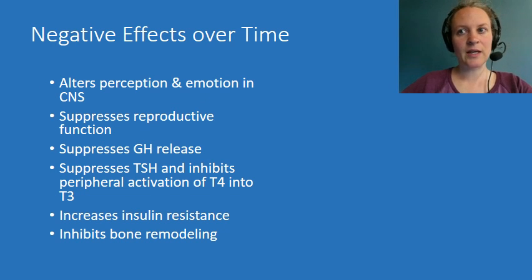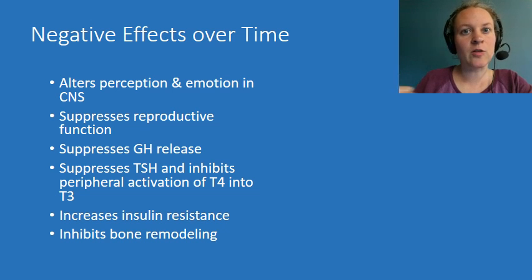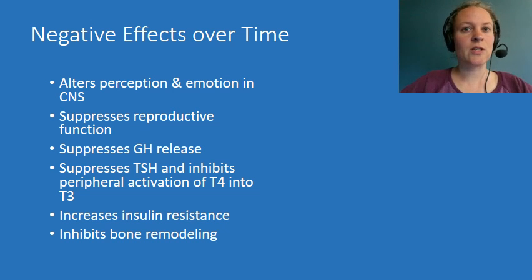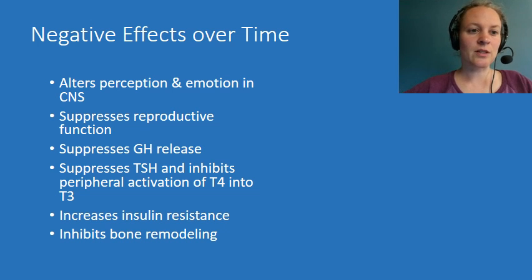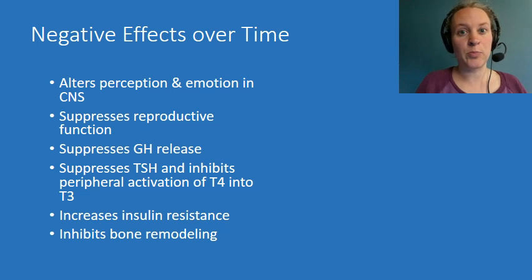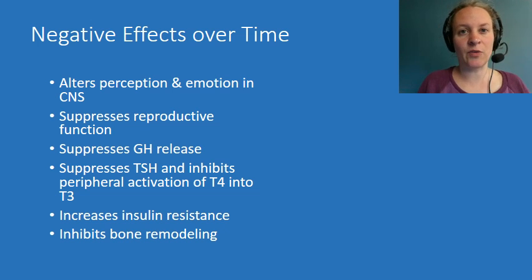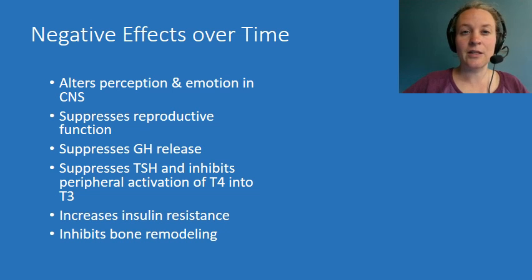Everything on the previous slide is actually beneficial in the short term — those are things you want happening in order to properly deal with the stressor. However, if the stressor does not go away and you have continual exposure to an extremely stressful situation, high levels of cortisol can eventually become problematic. This includes alterations in the way you perceive the world and express emotion, suppression of reproductive function — infertility, cessation of the menstrual cycle — which can be seen in athletes undergoing prolonged high-intensity training.